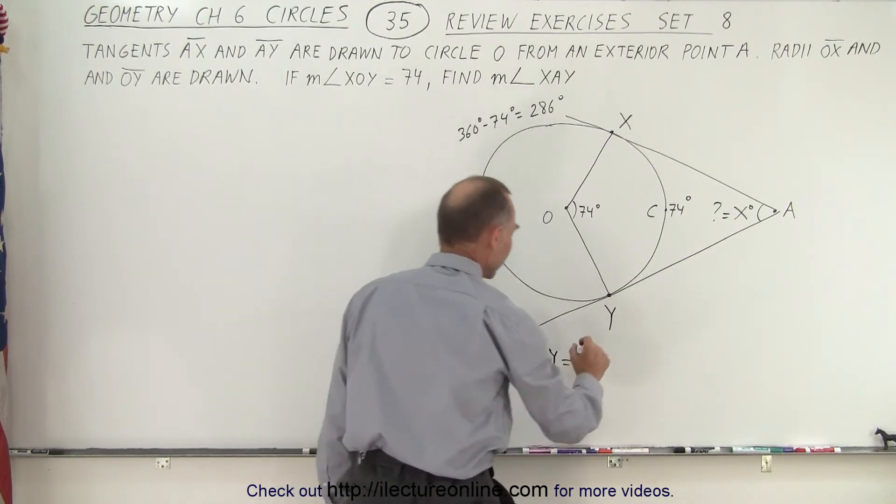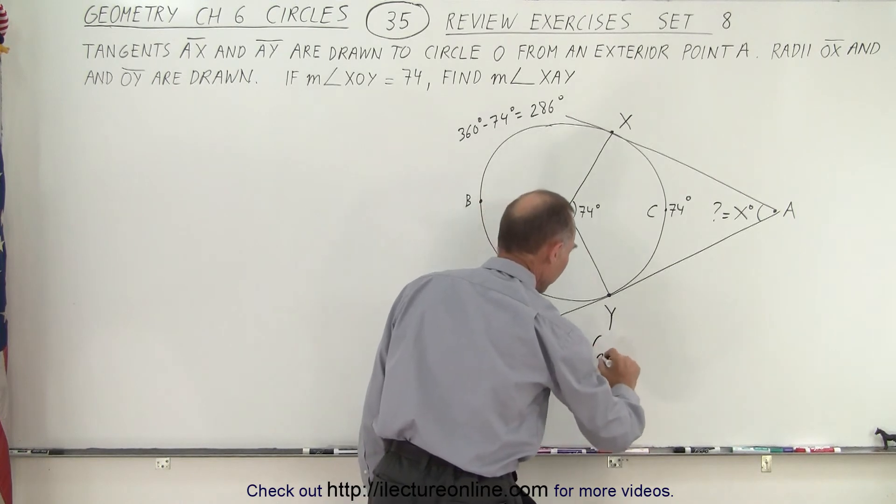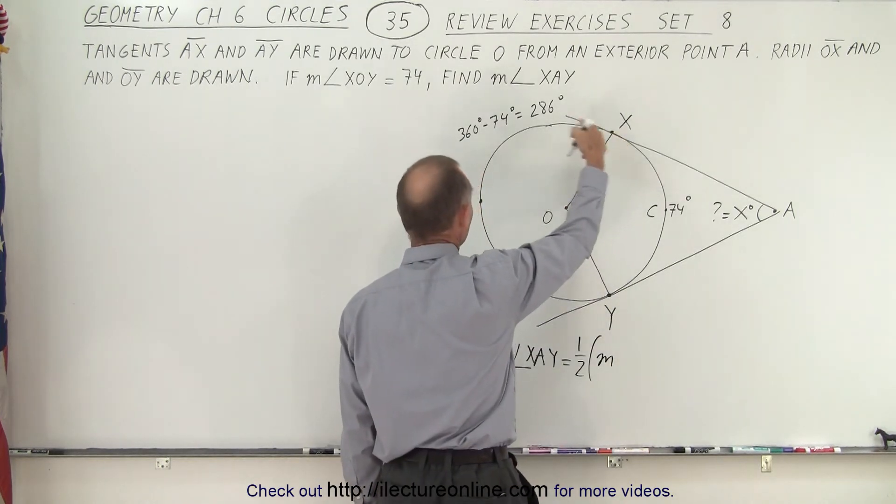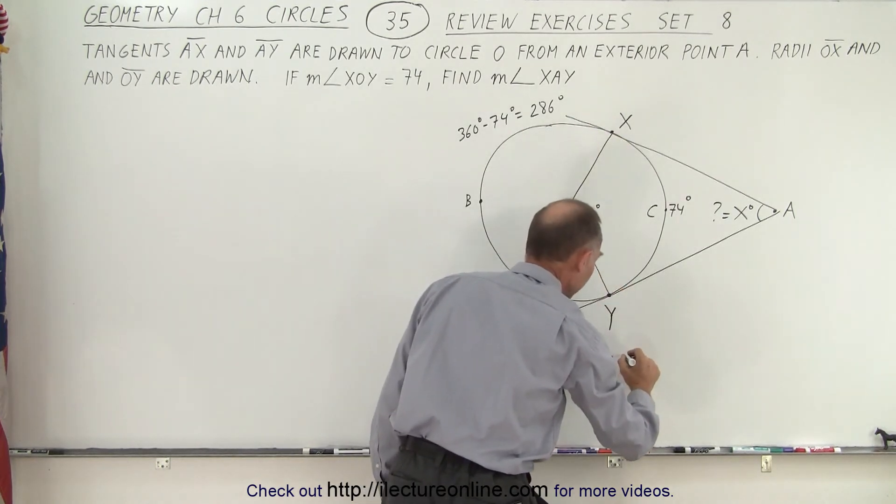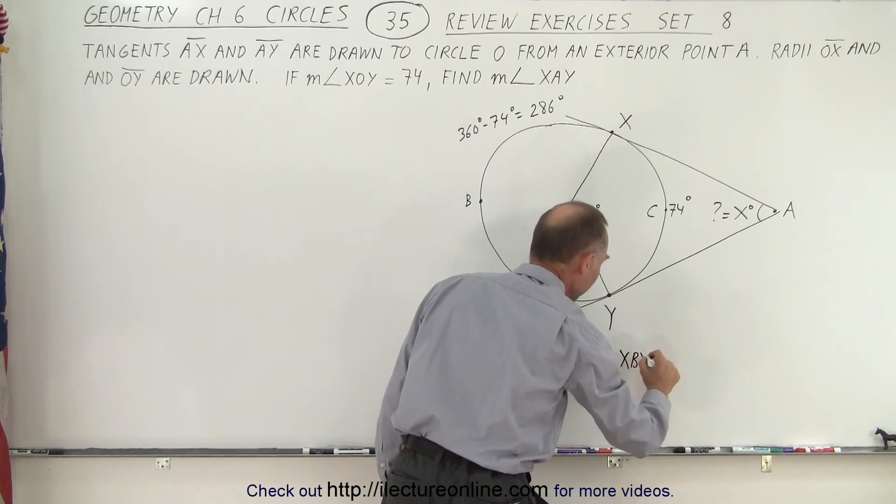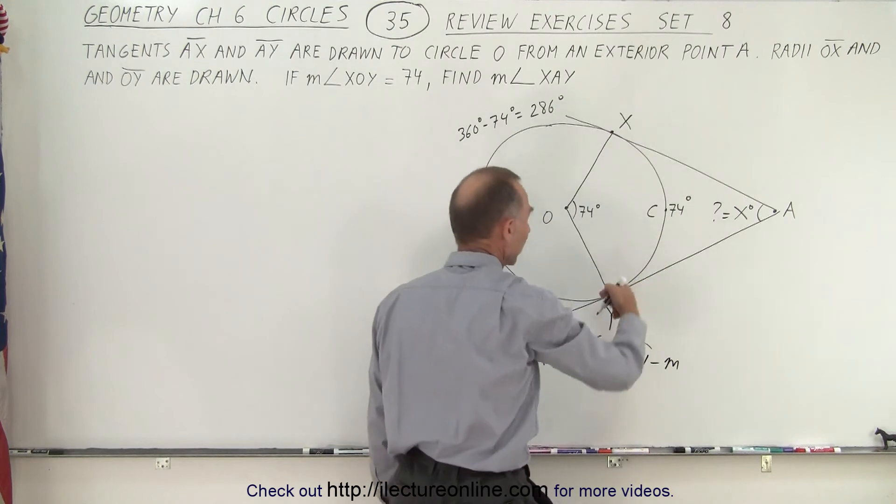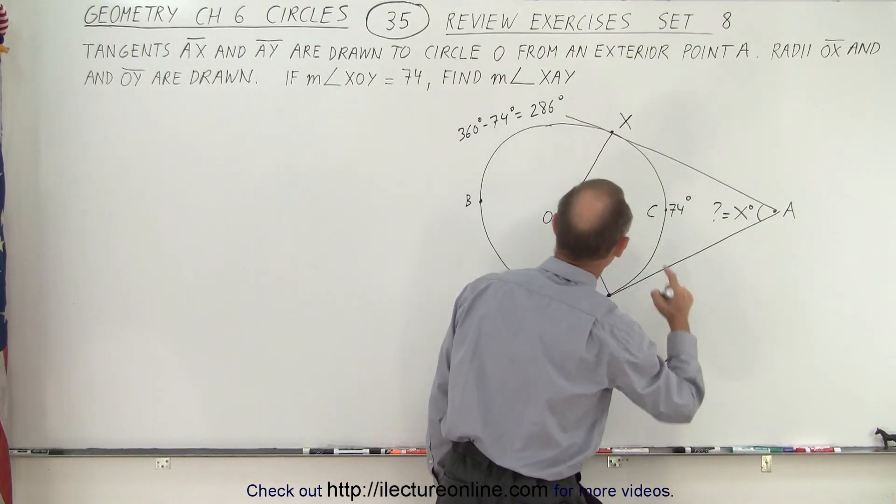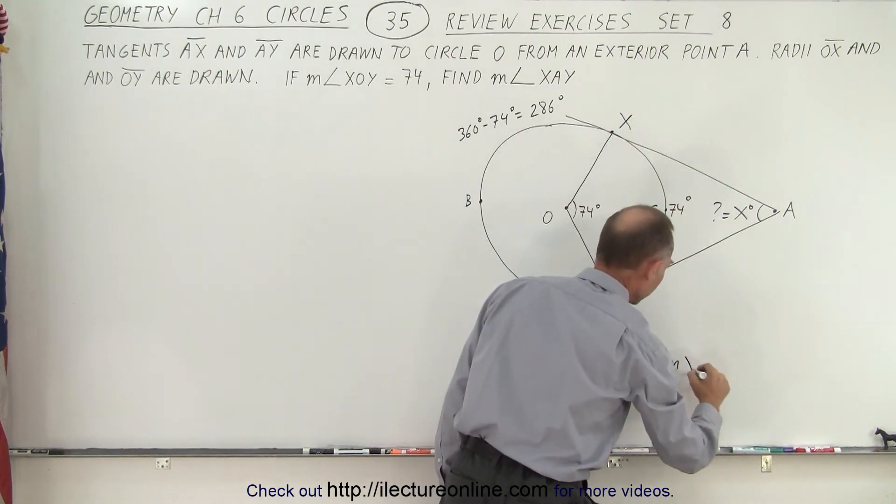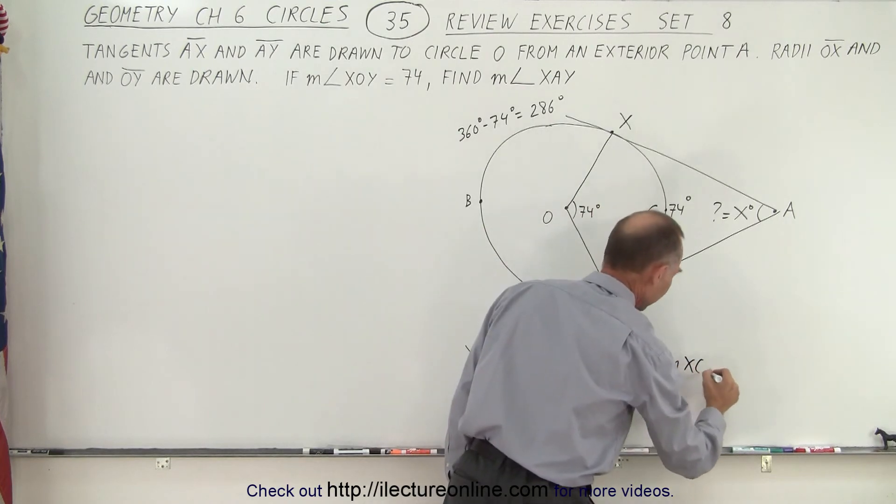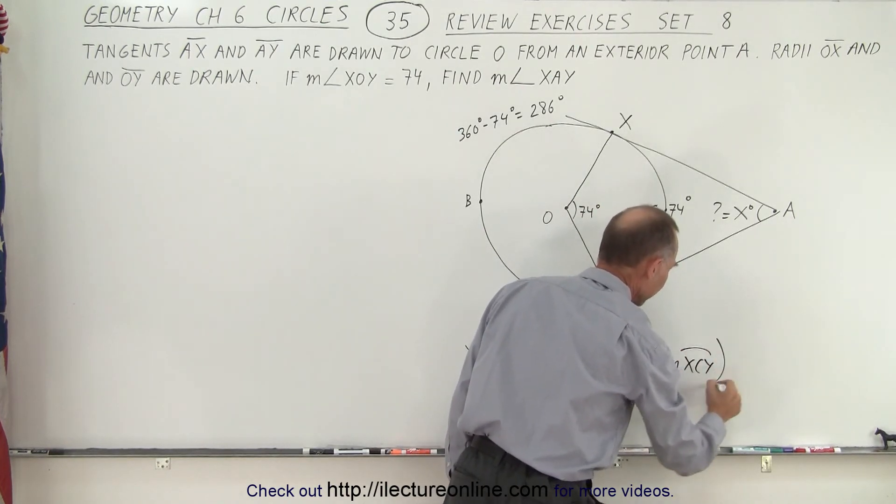That is equal to one half the measure of XBY, so that would be the measure of that arc minus the measure of the interior arc, which is the measure of XCY. That's why I put the reference B and C in there because that makes it a little bit easier.